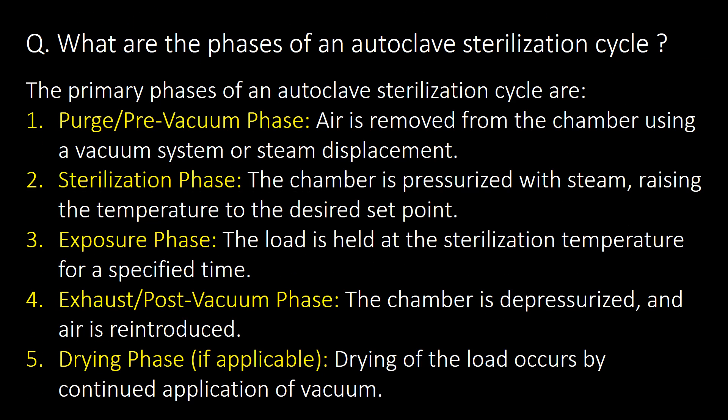Second question: what are the different phases of an autoclave sterilization cycle? There are mainly 5 phases. First is the purge or pre-vacuum phase. Second is the sterilization phase. Third is the exposure phase. Fourth is the exhaust or post-vacuum phase. And fifth is the drying phase, if applicable.